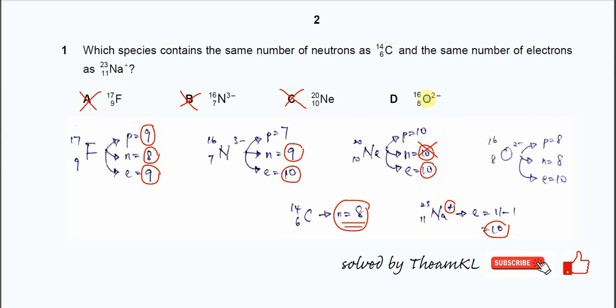So for the oxide, proton number is 8, neutron number is 16 minus 8, so you get 8. So same numbers. And the electron number is, because it's 2 negative, so it's 8 plus 2, you get 10. So the neutron number same, electron number also same. Therefore answer is D.